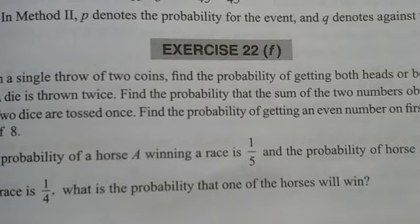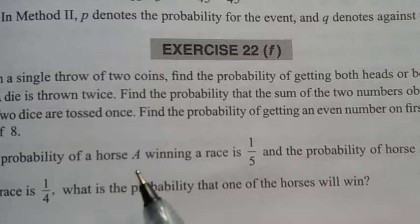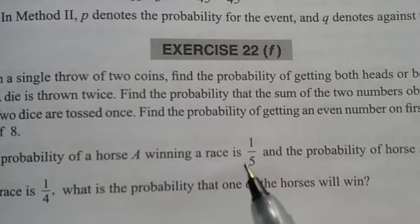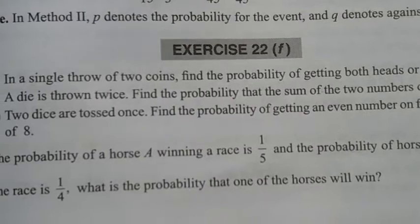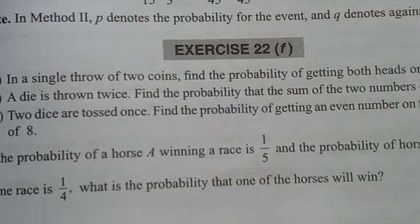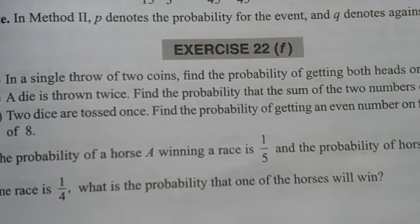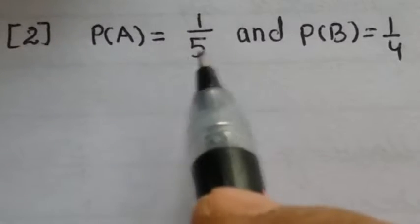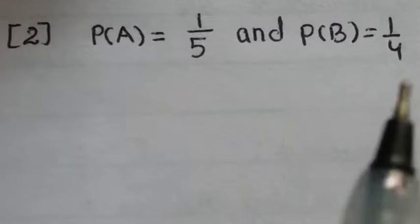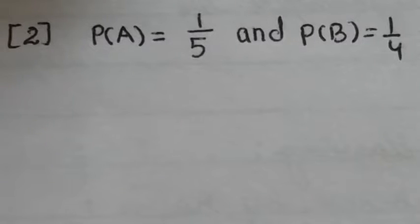Since the events are mutually exclusive, the probability of A or B winning equals P(A) plus P(B). The probability of A is 1/5 and the probability of B is 1/4.